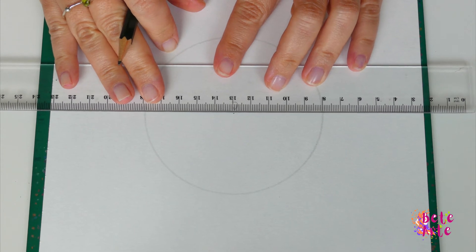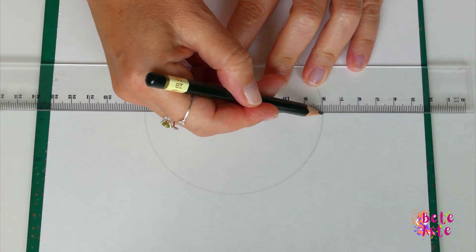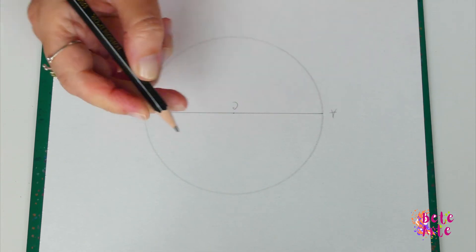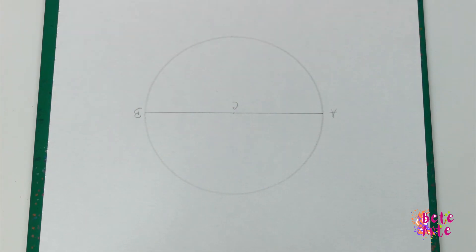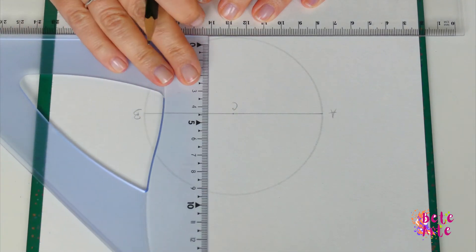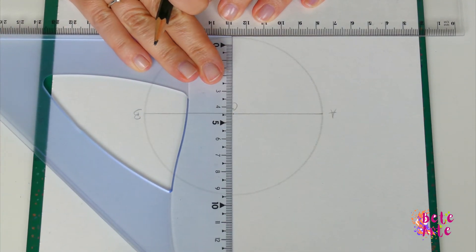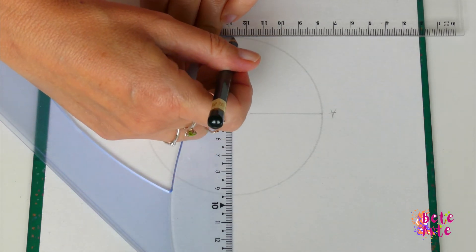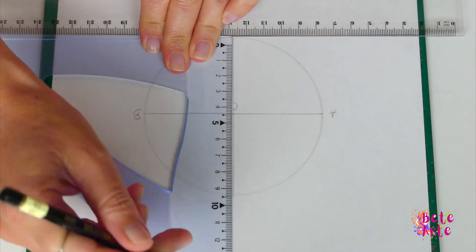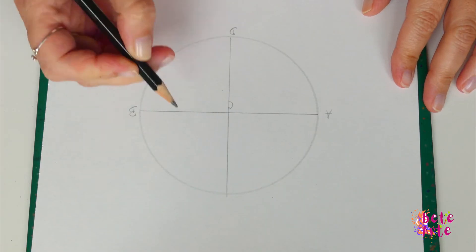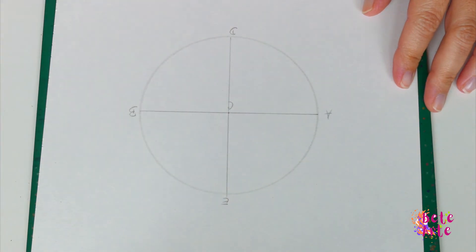Draw a line through the center of the circle and name it A and B. Draw a perpendicular line through C. Name the intersection points D and E.